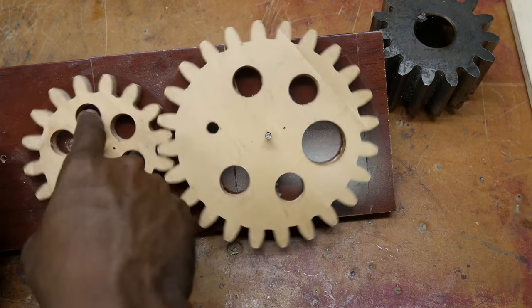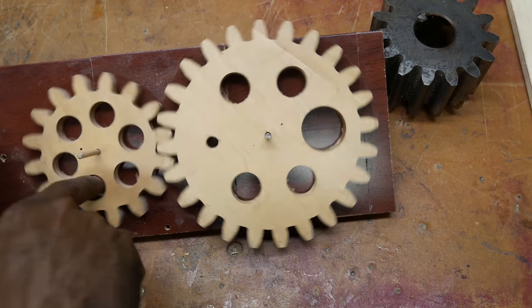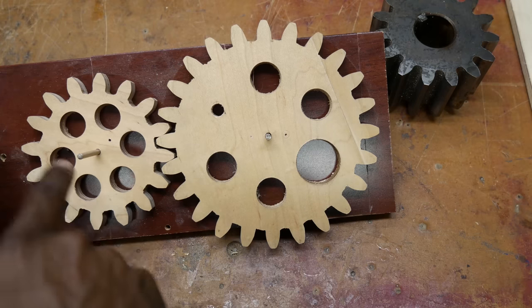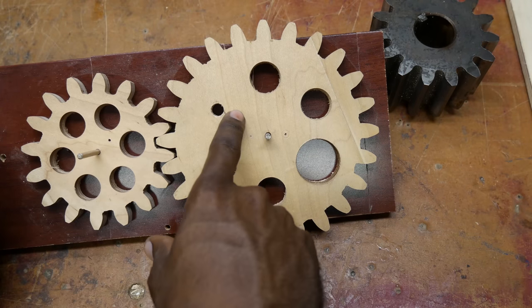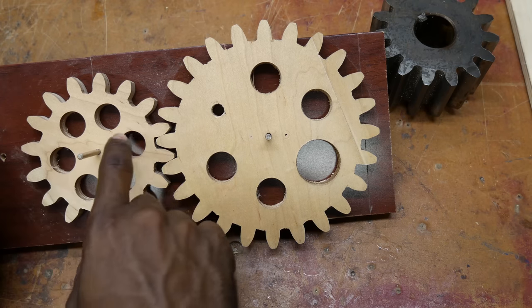This smaller gear, the pinion as it's usually called - if the motor is attached to this gear, then this will be the driver and the larger gear is the driven gear. With this setup you have what's called a torque multiplier.